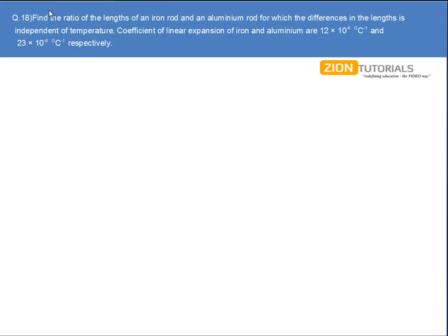Find the ratio of the lengths of an iron rod and an aluminum rod for which the difference in the lengths is independent of temperature. Coefficient of linear expansion of iron and aluminum are 12×10^-6 and 23×10^-6 respectively.